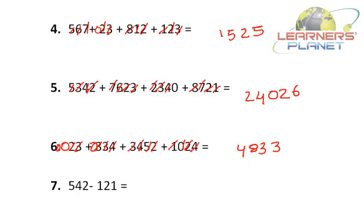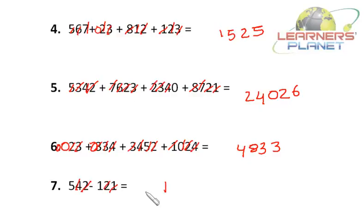Now let's take the next problem — it's subtraction. The problem is 542 minus 121. Let's begin: 2 minus 1 is 1, 4 minus 2 is 2, 5 minus 1 is 4. So we get the answer as 421.